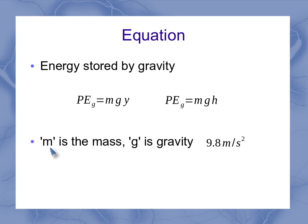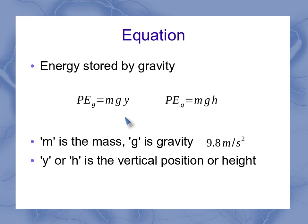In both of these equations, m is the mass, and g is gravity, that acceleration of gravity, 9.8 meters per second squared. And the y, or the h, is the vertical position, or height.